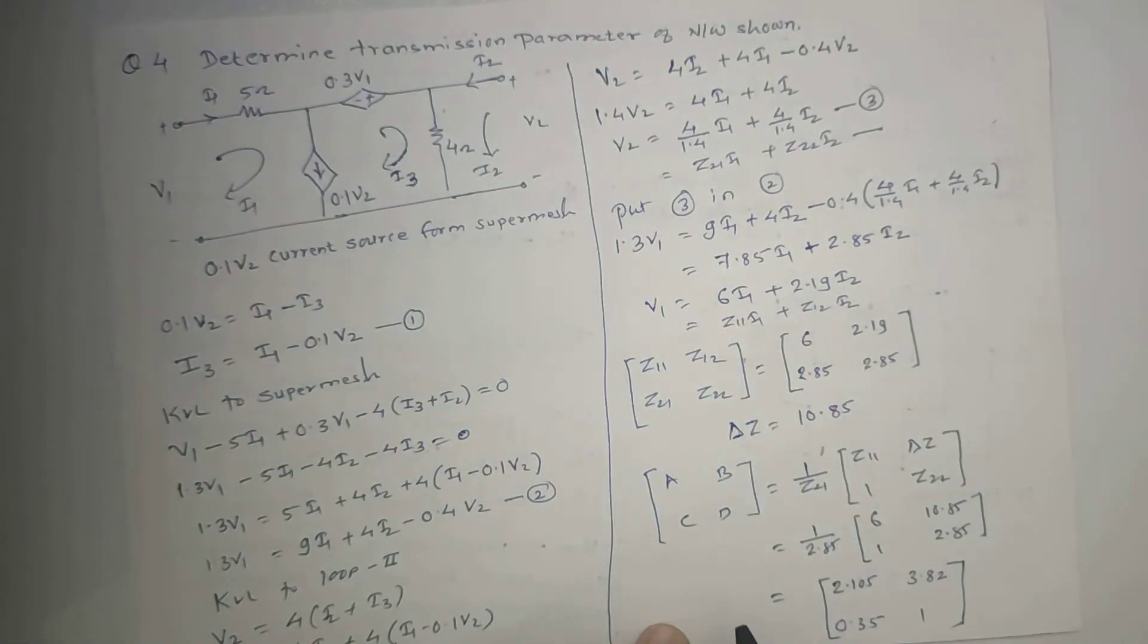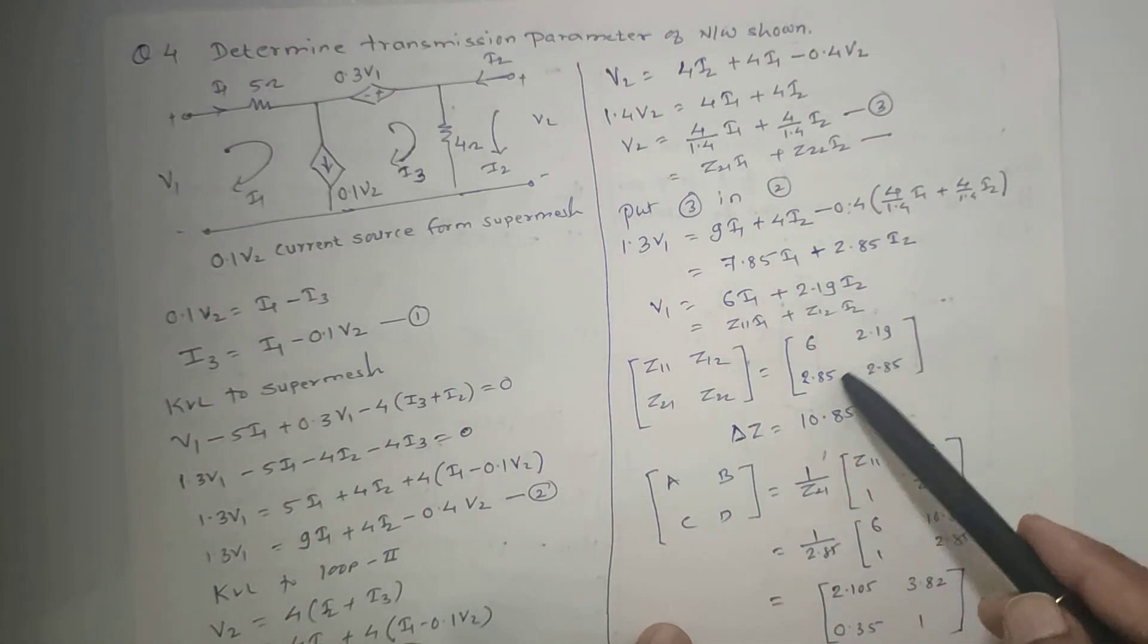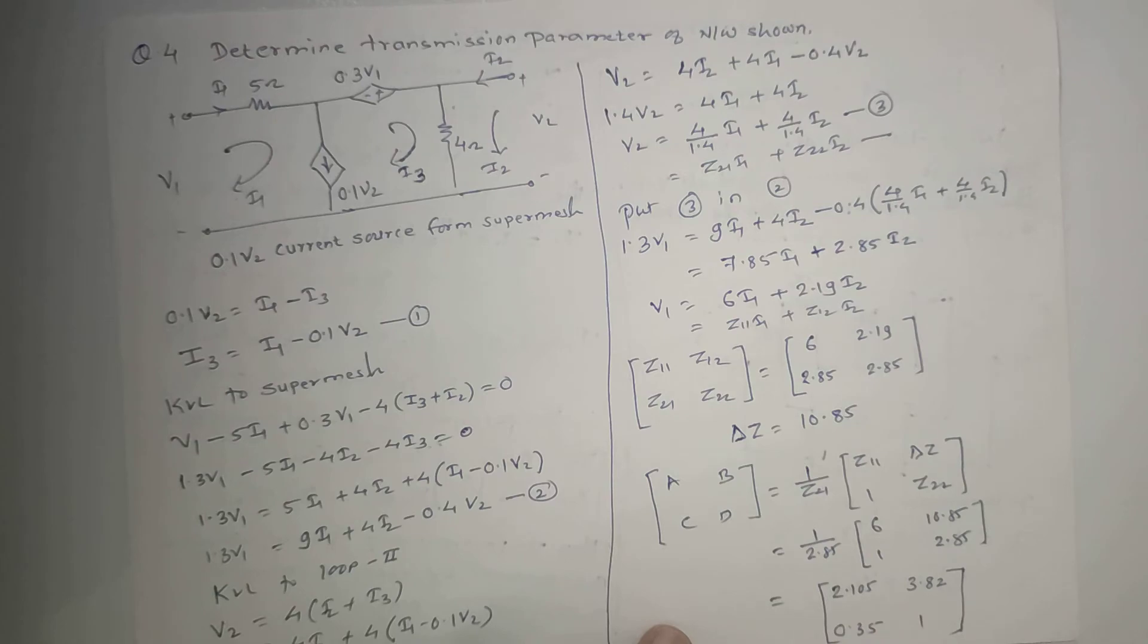In terms of Z parameter, the formula is: A, B, C, D equals 1 upon Z21, then Z11, del Z1, Z22. If you substitute the values here from this matrix, you will get the A, B, C, D parameters. This is the transmission parameter of the given network.